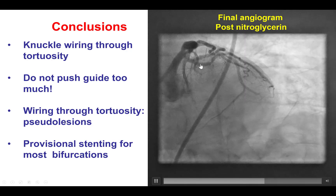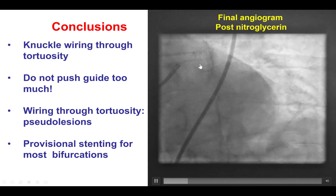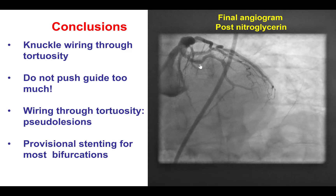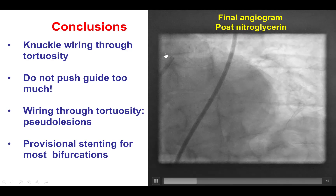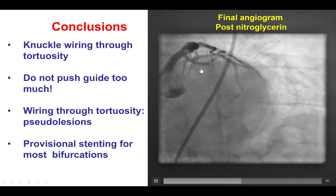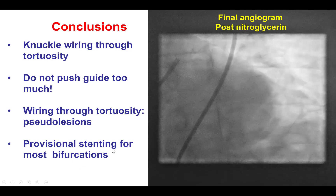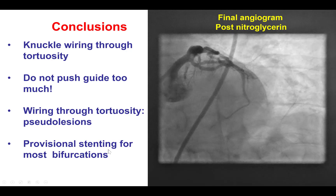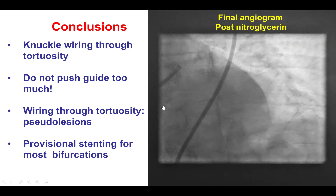And finally, this was a Medina 010 bifurcation classification, and for such bifurcations the provisional technique is the preferred strategy, and this was done successfully in this case.